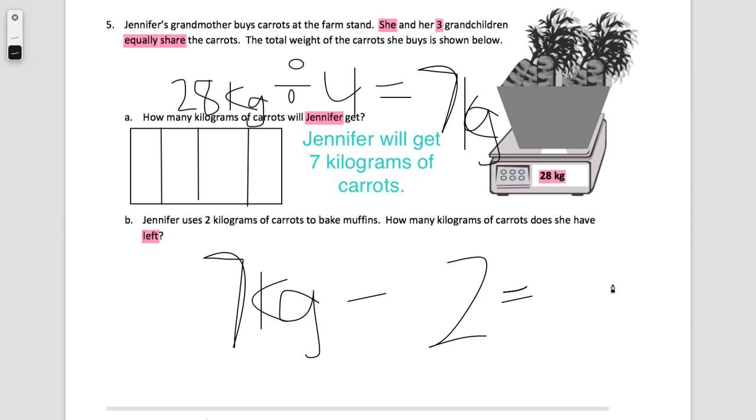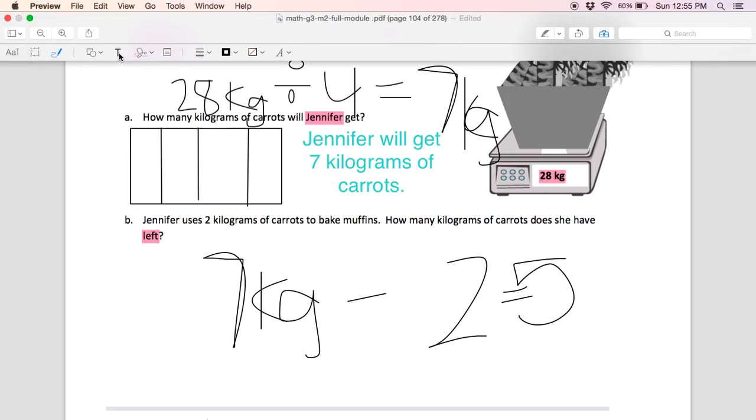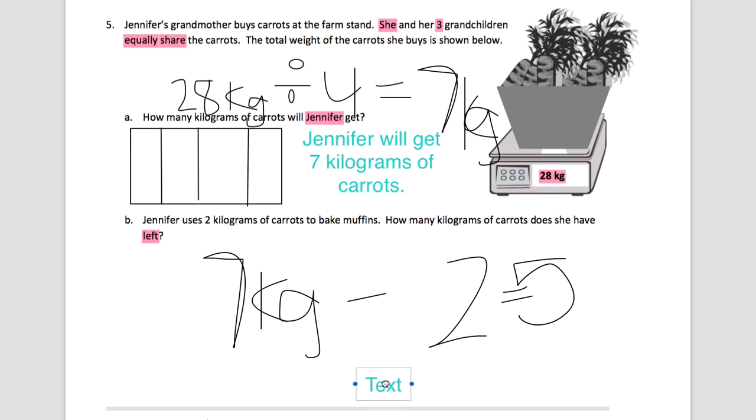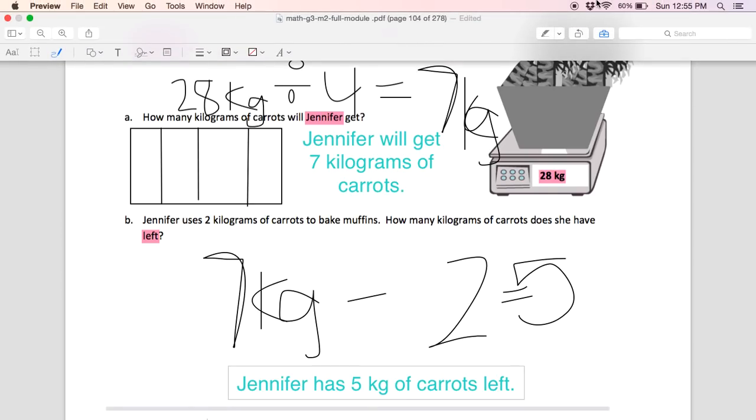Seven minus two, which gives us five. If I write this as a sentence, I will have Jennifer has five kilograms of carrots left. This concludes the back of your homework for lesson eight.